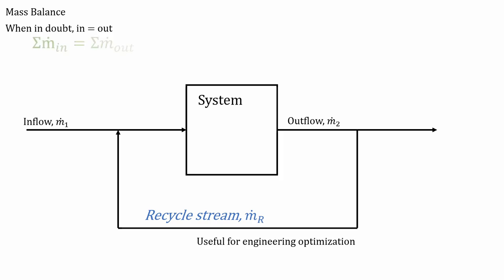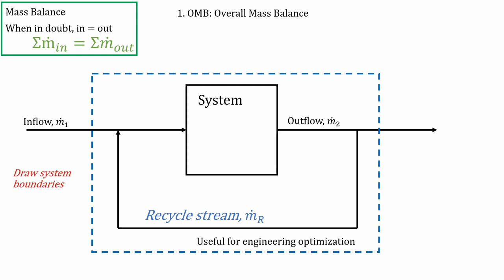Remember, when in doubt, n equals out. And first thing we like to do is the overall mass balance. So what we have to do is draw our system boundaries and apply the mass balance equations. And notice how the overall mass balance doesn't contain the recycle stream within the system boundaries. Applying the equation, we have all the flow rates coming in, ṁ_in equals all the flow rates coming out. In this case, we just have one in and one out. So that's our first equation.